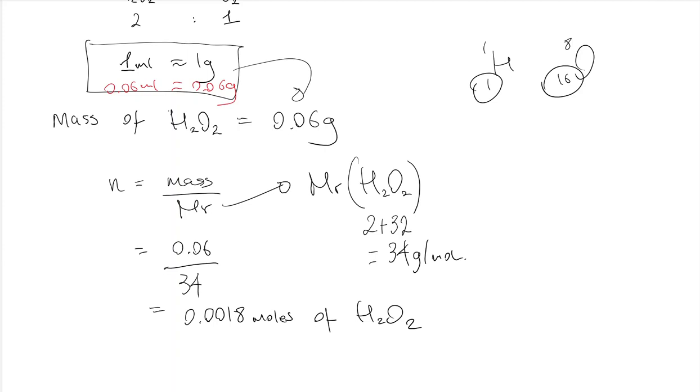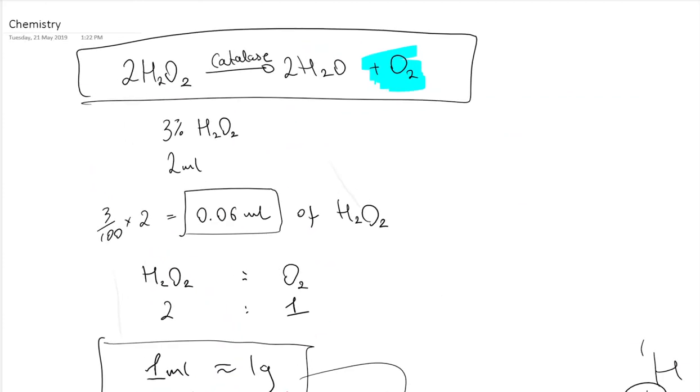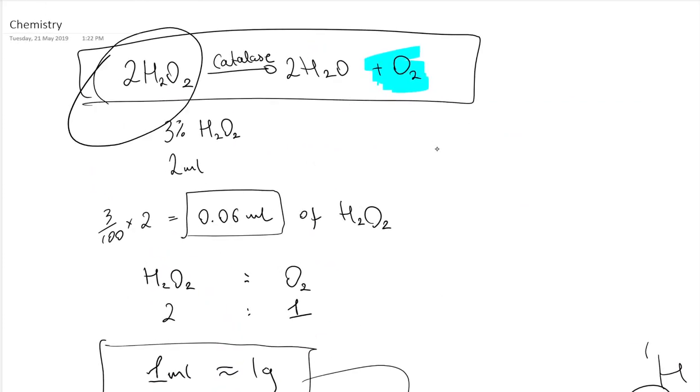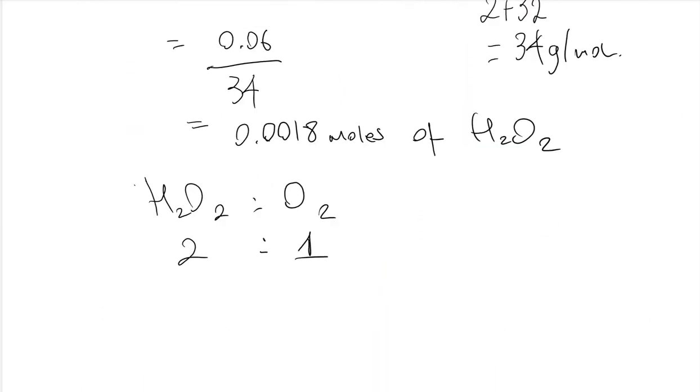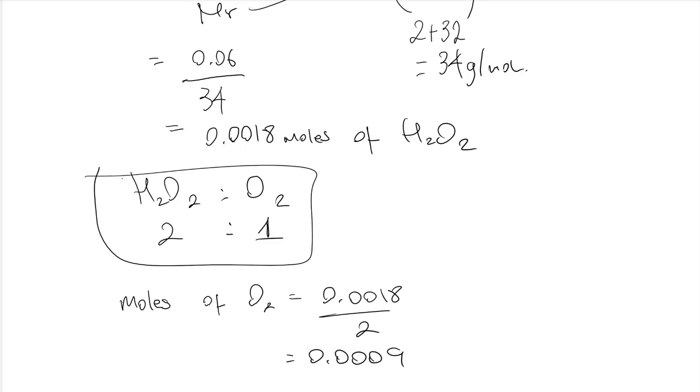But I want the moles of oxygen. So that ratio at the top, H2O2 to oxygen is 2 is to 1, from my balanced equation. So if I've got the moles of hydrogen peroxide, the moles of oxygen would be that 0.0018 divided by 2. For every 2 moles of hydrogen peroxide, 1 mole of oxygen. And I get 0.0009.